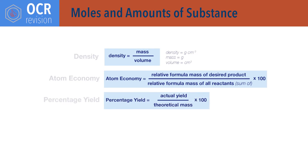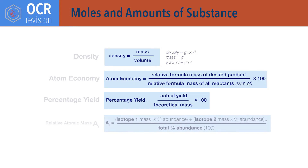Percentage yield equals actual yield, or mass of product obtained, divided by the theoretical or maximum possible mass of product that could have been obtained, times 100. Relative atomic mass, Ar, equals the sum of each isotope mass times its percentage abundance, divided by 100.